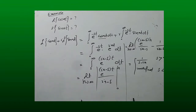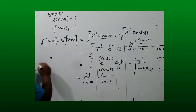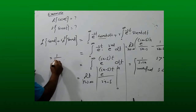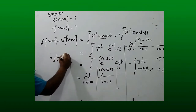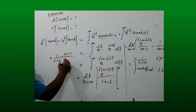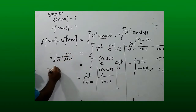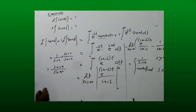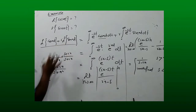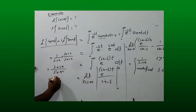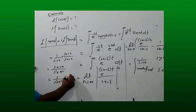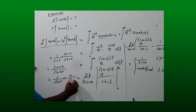So 1/(s - ia) can be rationalized by multiplying by (s + ia)/(s + ia), giving (s + ia) over (s² + a²). This expands to s/(s² + a²) + i·a/(s² + a²).